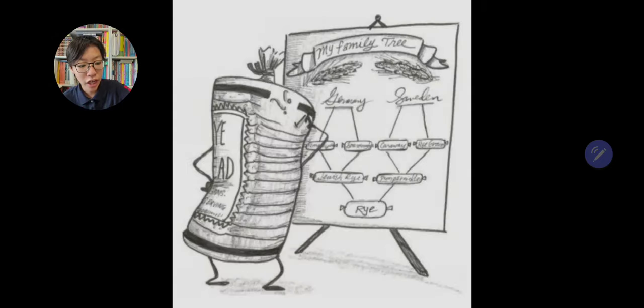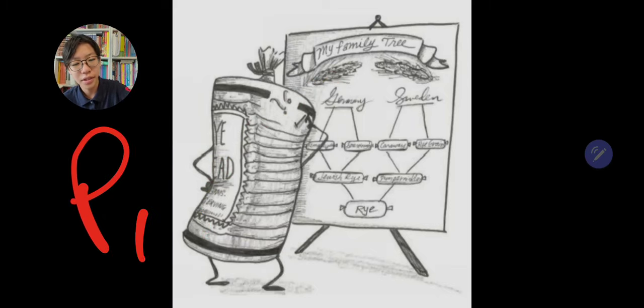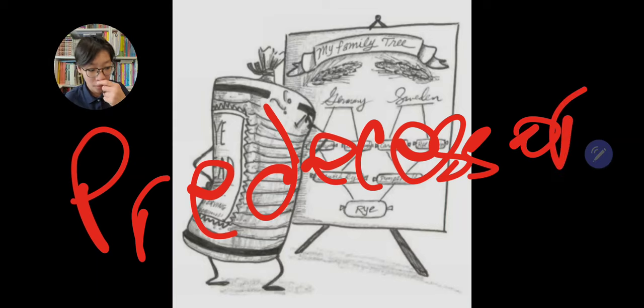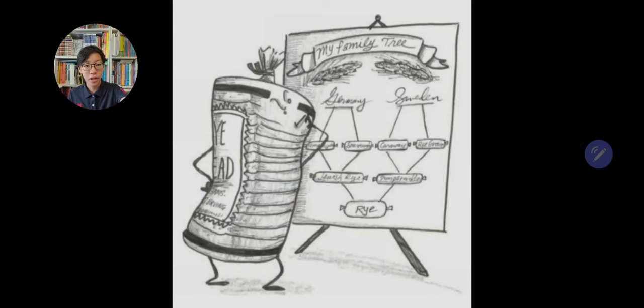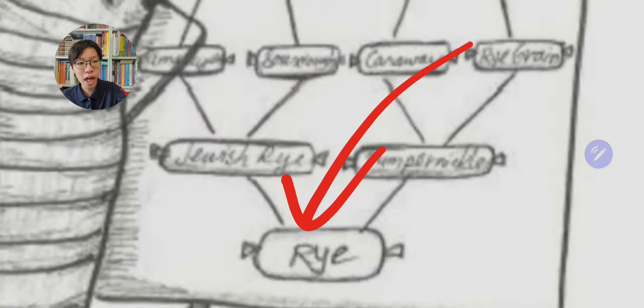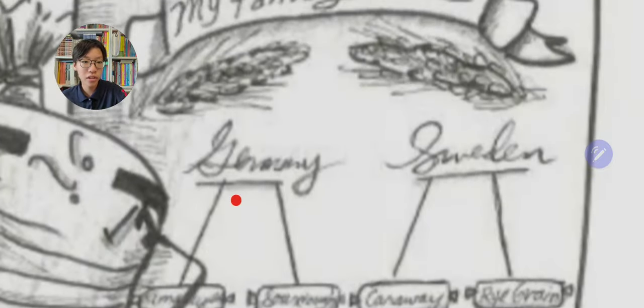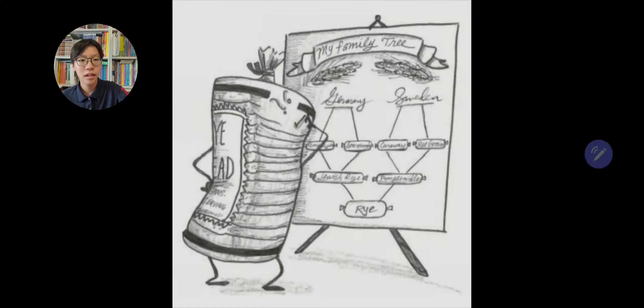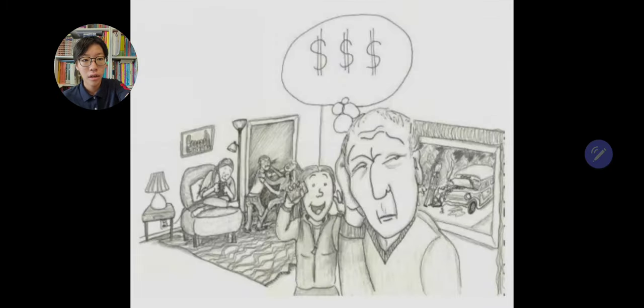Next up, we have predecessor. Predecessor just basically means your ancestor, the person who you are from. In this case, this bread is trying to find his ancestry, so he goes into the bread and keeps trying to go ahead and figure out where it is. He goes down to these two, Jeremy and Swellen, and he's like, excuse me, but I can't seem to find any information after that. I need to do some digging.